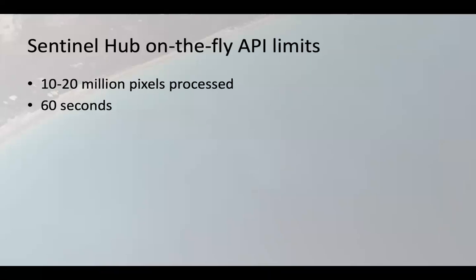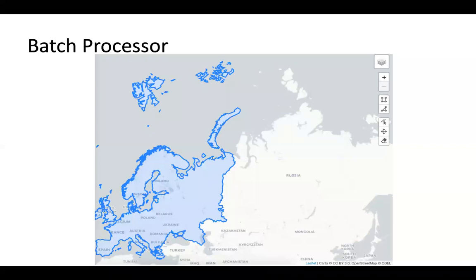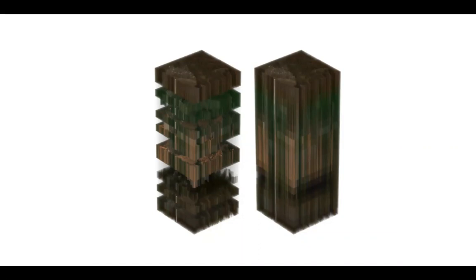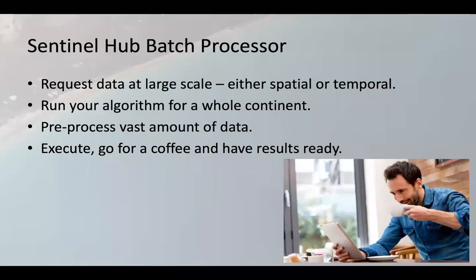The process API is ideal for instant requests for data. But obviously this has limits - we can process about 10 to 20 million pixels at a time, and overall it shouldn't take more than 60 seconds, otherwise there is a timeout. But there are many processes which do require more time than 60 seconds. This is why we introduced the batch processor a couple of months ago, which basically offers the same feature set as the process API but is really fine-tuned for large scale processing. A typical use case is creating features for machine learning where you want chips, usually 10 by 10 kilometers or so, over a year, masking clouds and doing some interpolation to create ideal features that you then put into TensorFlow or something like that.